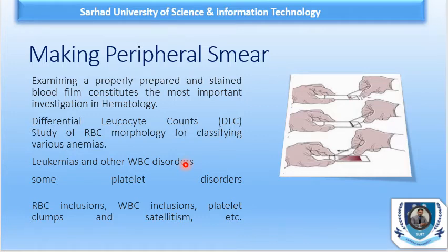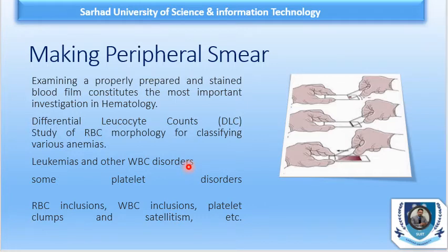In WBC morphology we are looking for blasts, promyelocytes, and immature cells. We are looking for left shift, and in WBC disorders we are looking for toxic granulation, Pelger-Huet anomaly, or Alder-Reilly anomaly. Such types of investigations are very helpful and these investigations are made by the peripheral smear.